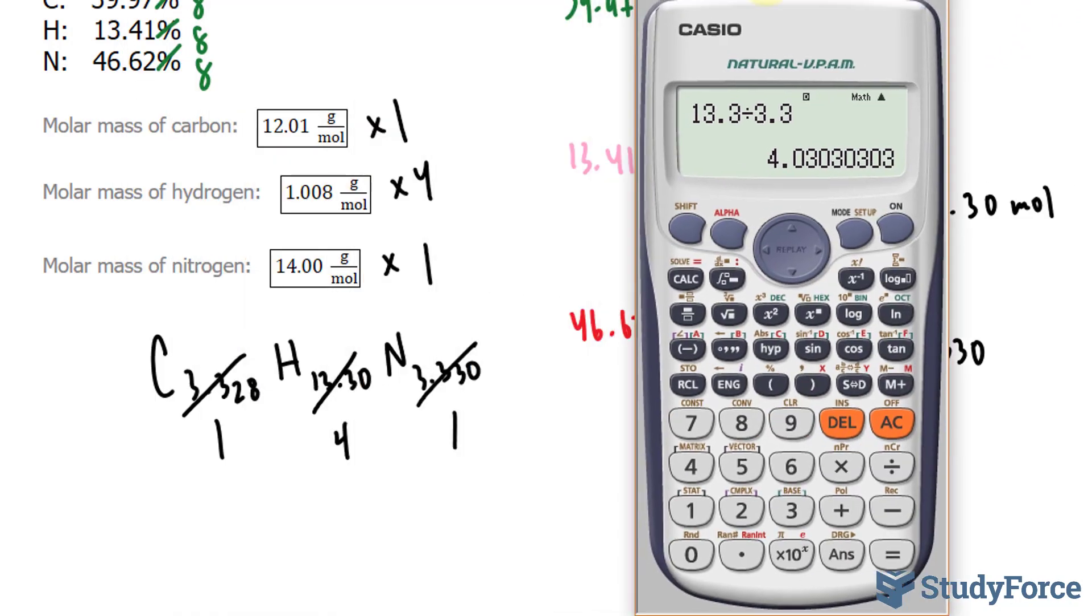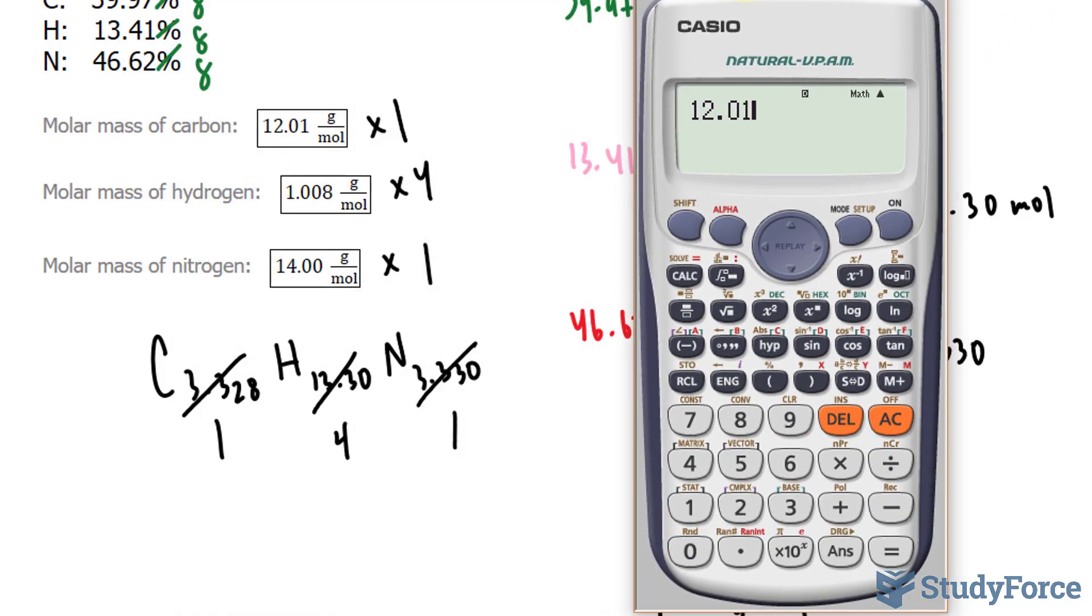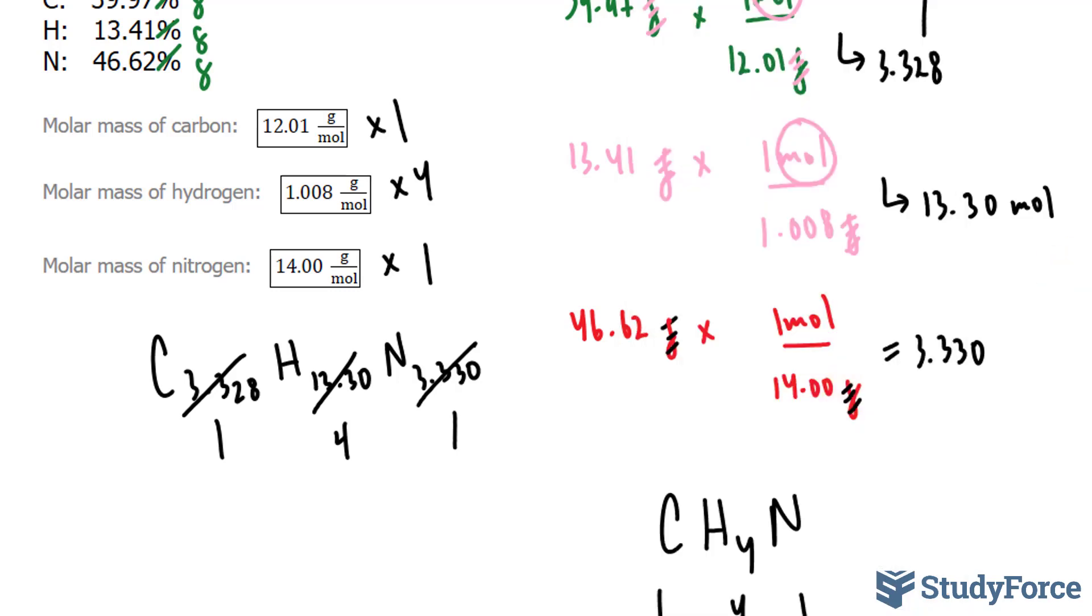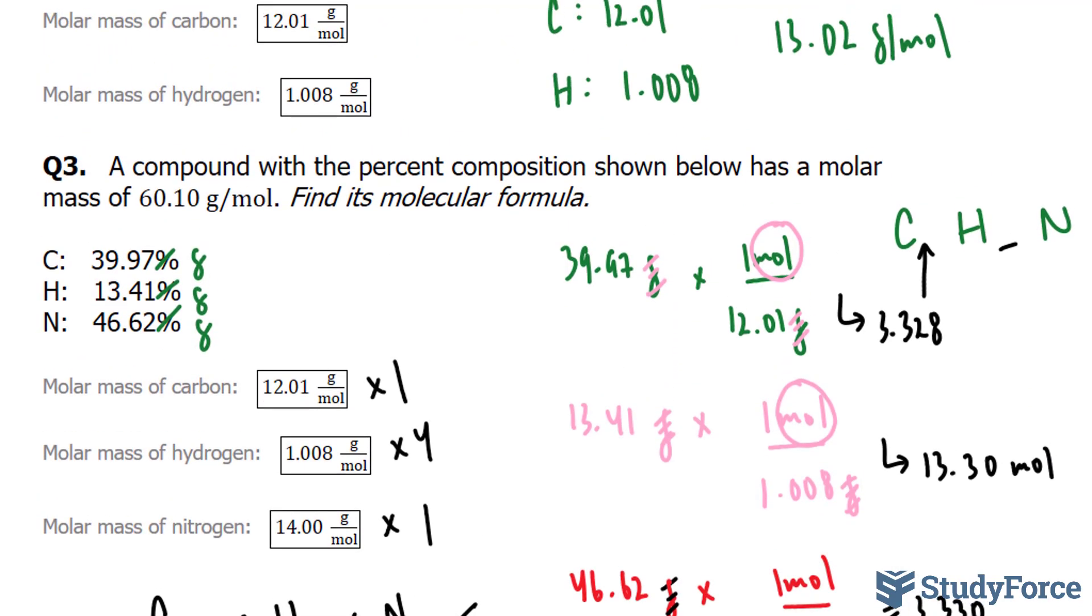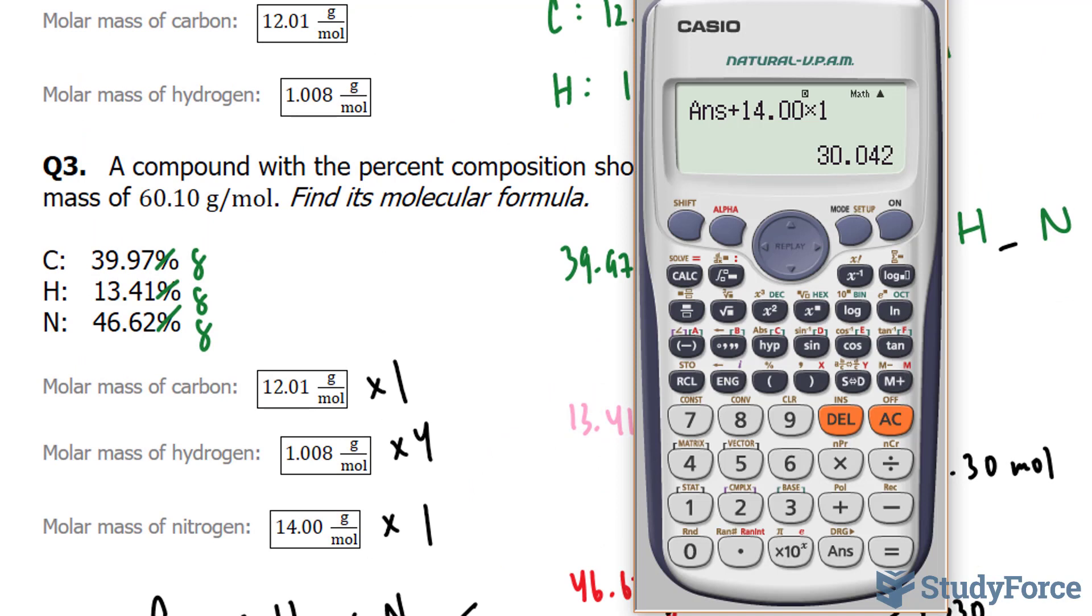I'll do it all in my calculator. I have 12.01 times 1, plus 1.008 times 4, plus 14.00 times 1. That is the molar mass of the empirical formula, and now I'll take the actual molar mass of 60, and if I divide 60 by this number, 60.10, by what I just found, I'll get approximately 2.